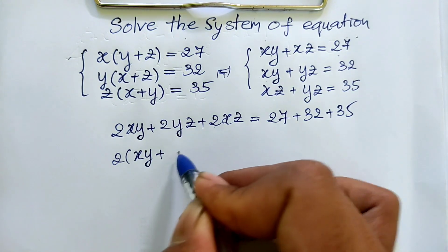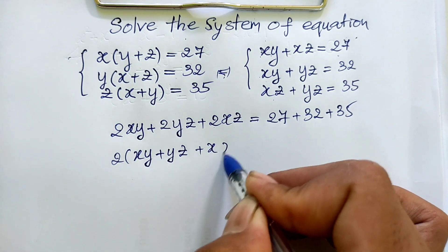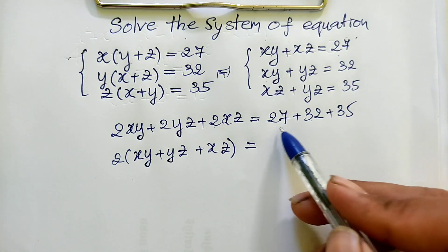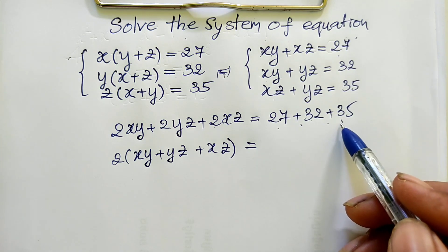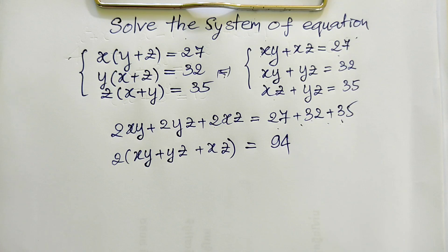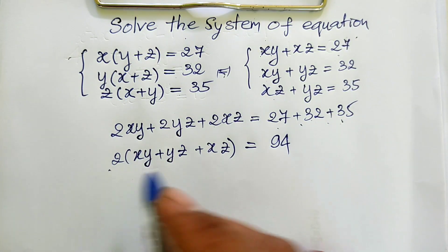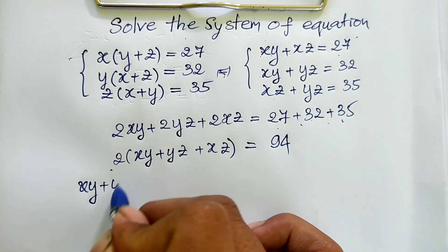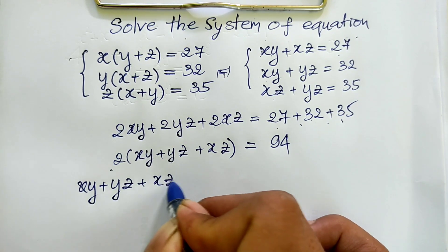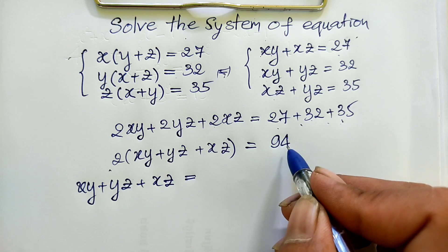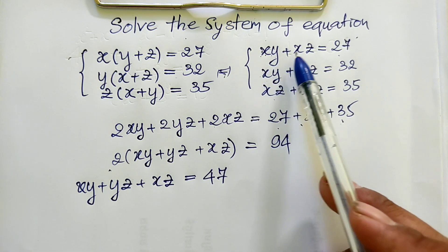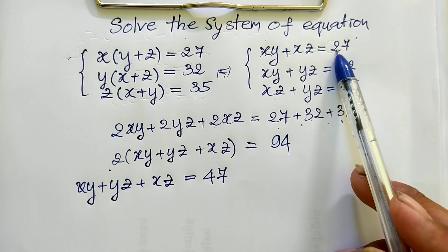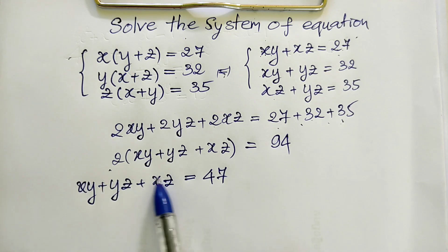So 2hy plus 2yz plus 2hz equals 94. We divide both sides of this equation by 2, and we get hy plus yz plus hz equals 47.